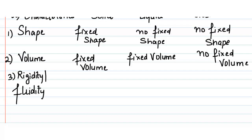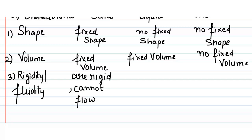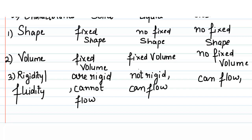The next characteristic is rigidity and fluidity. Solids are rigid, meaning they are hard, and solids cannot flow. Liquids, on the other hand, are not rigid and they can flow. Gases are also not rigid and they can flow.